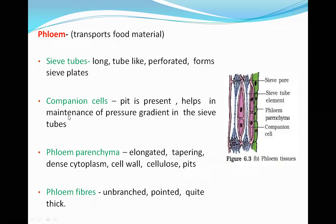The pink-colored cells seen in the diagram are the companion cells. Companion cells have pit-like structures and their function is to maintain the pressure gradient in the sieve tubes. Pressure gradient means balancing the pressure and maintaining equilibrium. So companion cells maintain this pressure gradient in the sieve tubes.